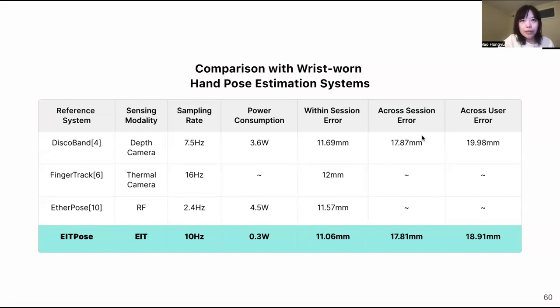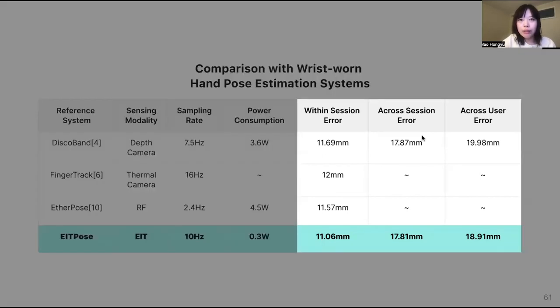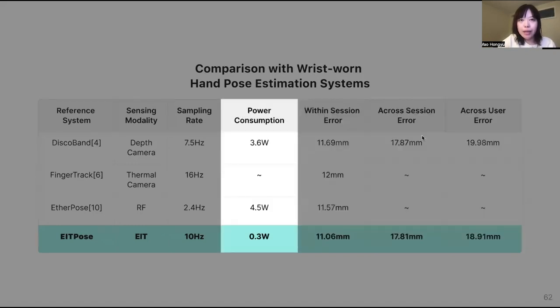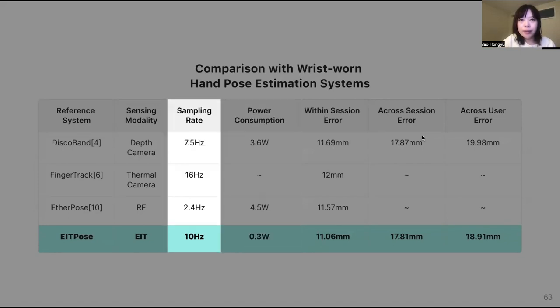We compared our results to previous studies using optical approaches like FingerTrak and Disco band. Our system shows similar or even lower errors compared to those direct sensing methods, which means our system could achieve the same levels of accuracy. And if we look at the power consumption, EITPose has 10-fold lower than those systems with a desirable sampling rate.